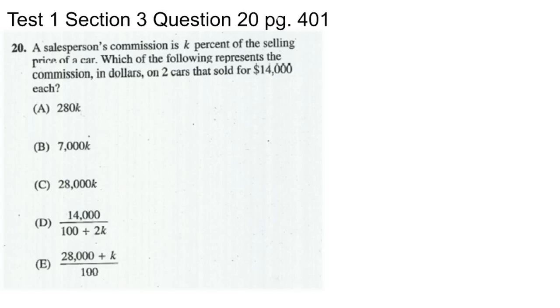Let's take a look at this first one. This comes from Test 1, Section 3, Question 20 on page 401. It says a salesperson's commission is K percent of the selling price of a car. Which of the following represents the commission in dollars on two cars that sold for $14,000 each? Normally this would seem like a really tough question, especially with variables in there. This is where using the simple substitution strategy can make this very easy. Instead of having K percent, we're going to choose a value for K. I recommend choosing 100 or 50 percent. For simplicity's sake, let's choose 100.